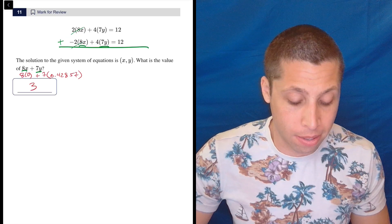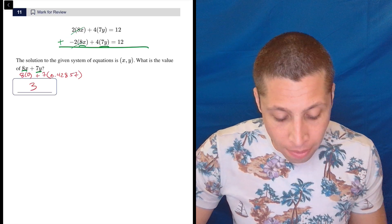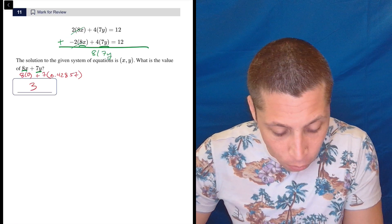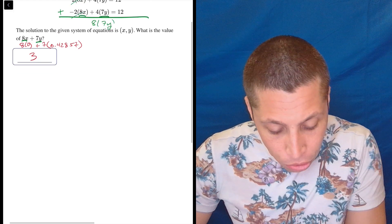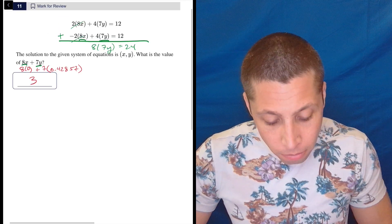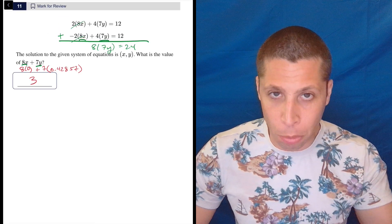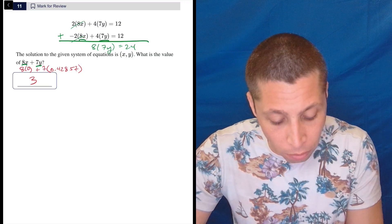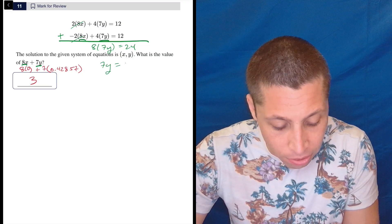Because 2 times 8x, negative 2 times 8x are going to cancel out. And then this is going to be 8 times 7y is equal to 24, right? No distribution necessary here. So 8 times 7y is 24. So if I divide by 8, I get 7y is 3.